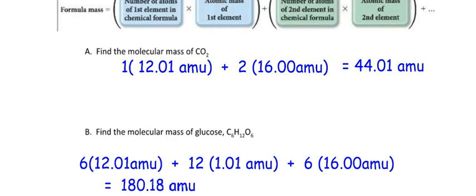Well, this is what I got. I had six carbons times 12.01, 12 hydrogens times 1.01, and six oxygens times 16. You end up with 180.18 AMUs.